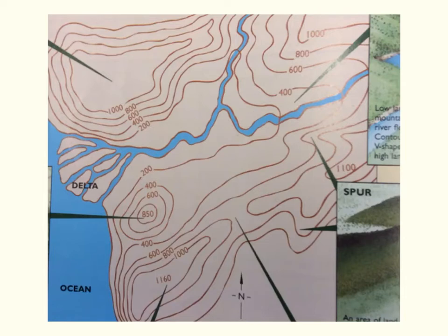What that means is if we were standing where the number 400 is and we walked on a path like this, we would not be going uphill or downhill. We would be going around in a circle because the line goes in a circle.